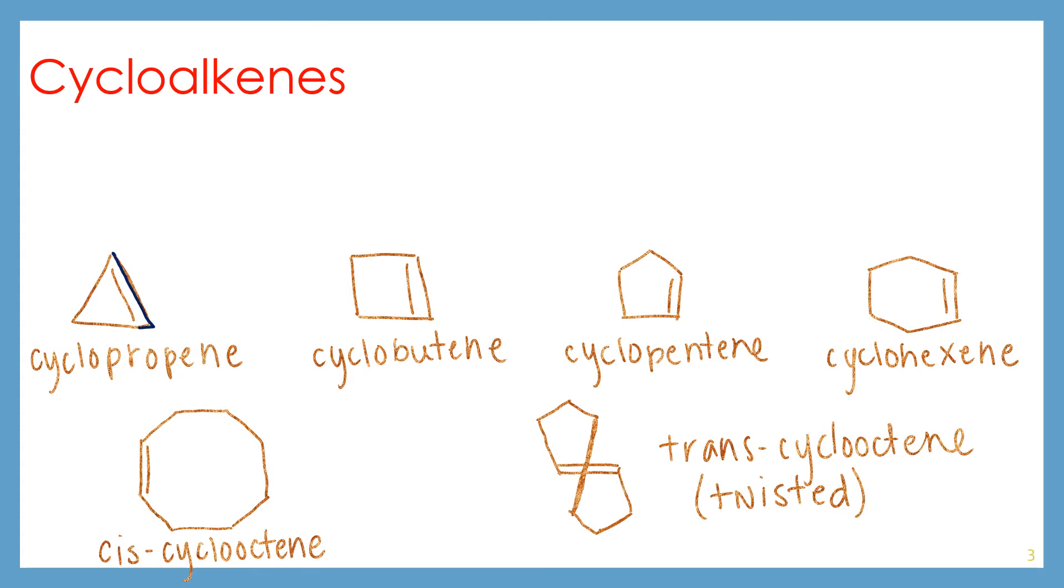If this were a trans alkene, it would somehow have to connect back over this way. That's completely improbable. There's no way that could work. And for most of our normal sized cycloalkenes, cis is really the only possibility because of that.